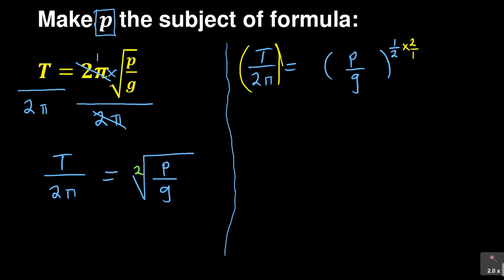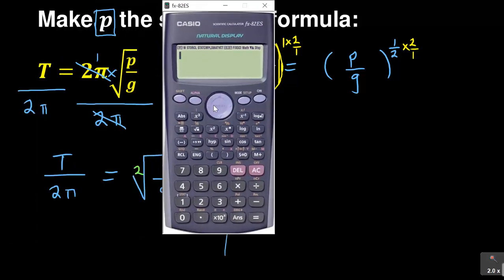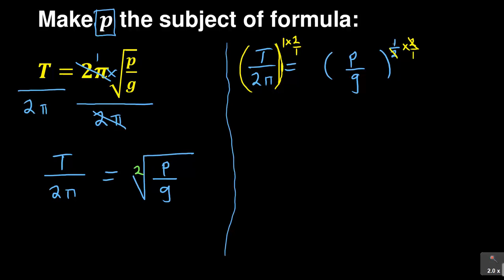Whenever no power is indicated it means it's power one, because power one doesn't change anything. So I also multiply the left side by two over one. The reason: one over two times two over one equals one — you can test that on your calculator. The two and the two cancel and you get one remaining. So what you have now is (t over two pi) to the power of two, equal to p over g.